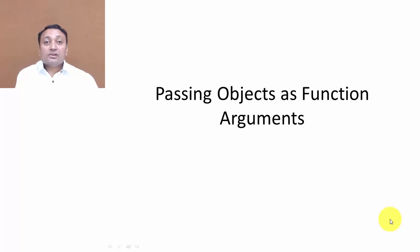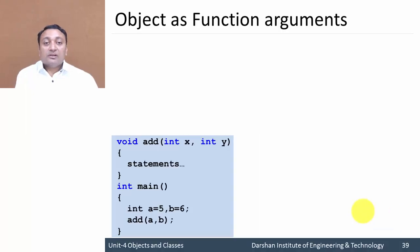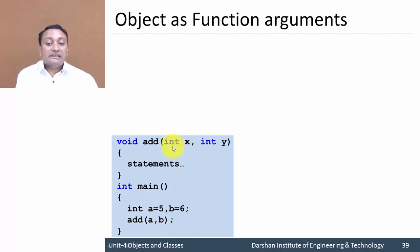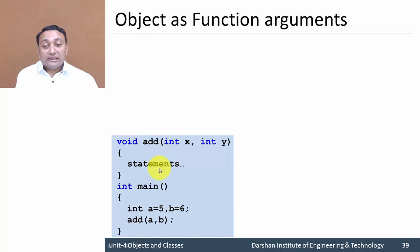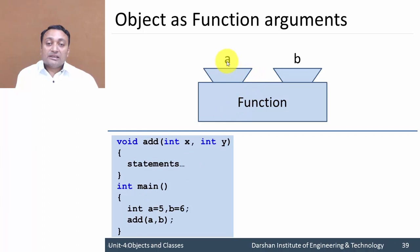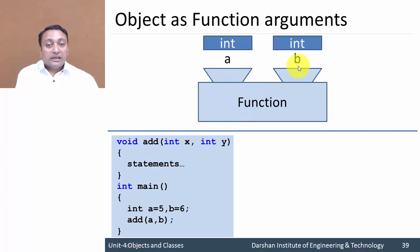Hello everyone. In this lecture we are going to discuss passing objects as function arguments. In our normal function call, we are passing variable a and b, both of type integer. The value of a will be copied to x, which is also integer, and value of b will be copied to y. Statements will be performed sequentially and control will revert back to the calling function.